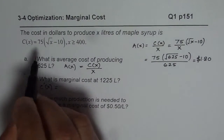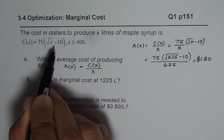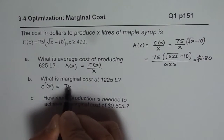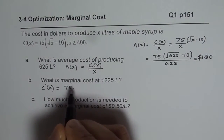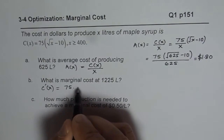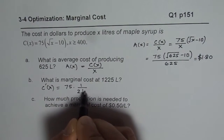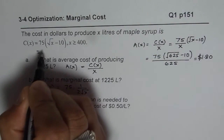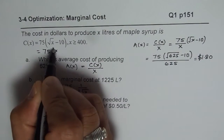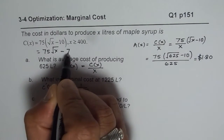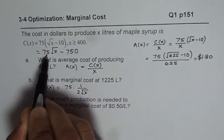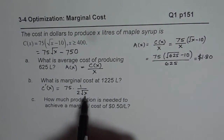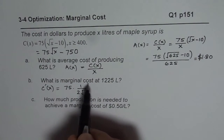To find the derivative, we expand the function: 75 times the square root of x minus 750. The derivative of the square root of x is 1 over 2 square root of x, so C prime of x equals 75 times 1 over 2 square root of x, which simplifies to 75 divided by 2 square root of x.